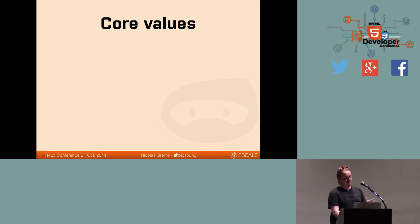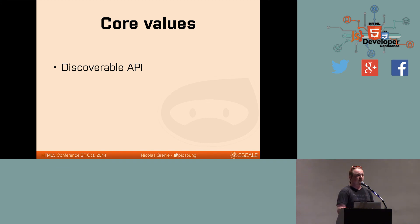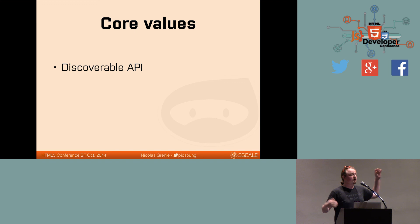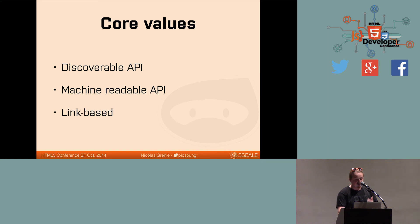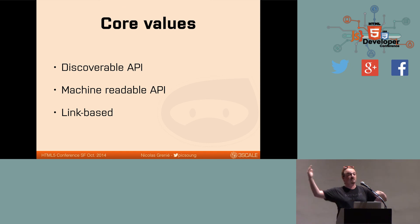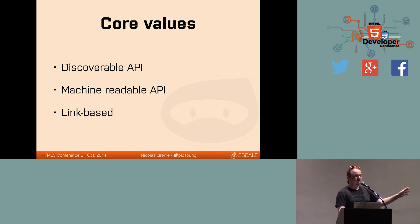What are the core values of hypermedia? It's something that is discoverable — discoverable means that you can understand the API without reading the documentation. If you hit the first endpoint, like api.domain.com slash nothing, then from there you should be able to discover what's happening in the API. That makes the second core value: the API is machine readable. A program can understand the API — you don't need someone else to understand what are the parameters, what should be passed. Everything should be written in this first endpoint. And how are you doing this? You do this using links. It's your browser experience in your API.